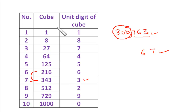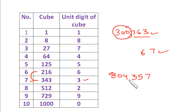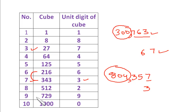Let's take one more number: 804357. The number has 7 at the units place, so the cube root will have 3 at the units place. The remaining part, 804, lies between the cubes of 9 and 10, so the tens digit will be 9. Therefore the cube root of 804357 is 93.